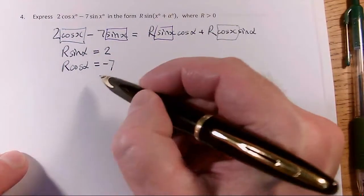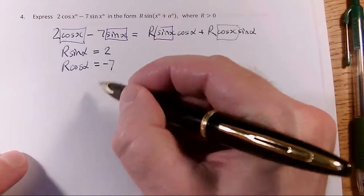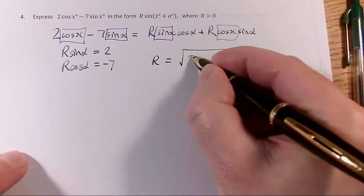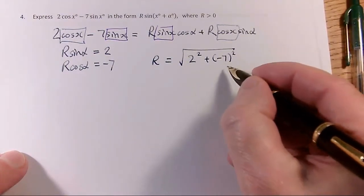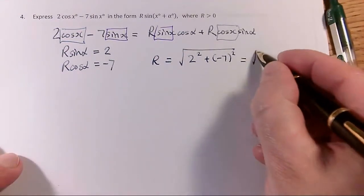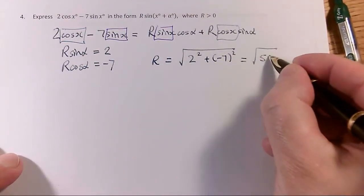Okay, so let's do the r first. So r works as normal. I can still Pythagoras, the 2 and the minus 7. So r is still the square root of 2 squared plus minus 7 squared. And of course you'd be perfectly okay missing off the minus sign because we're squaring it anyway. It's just the square root of 2 squared, which is 4. 7 squared is 49, so it's just root 53.